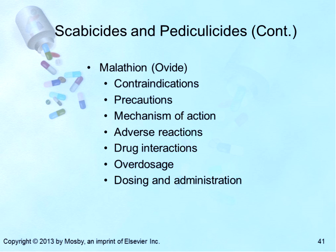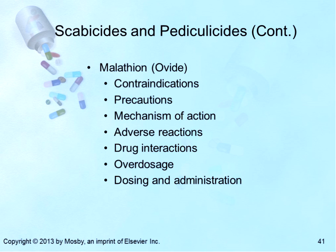Malathion is a weaker cholinesterase inhibitor than other organophosphates, but overdose symptoms are the same. Symptoms of toxicity could be delayed for 12 hours and include abdominal pain, anxiety, unsteadiness, confusion, diarrhea, labored breathing, dizziness, drowsiness, increased sweating, watery eyes, muscle twitching, pinpoint pupils, seizures, and slow heartbeat. For dosage and administration: sprinkle lotion on dry hair and rub gently until the scalp is thoroughly moistened, paying special attention to the back of the head and neck. Allow hair to dry naturally — do not use heat. Leave uncovered and after 8 to 12 hours wash with a non-medicated shampoo; use a fine-tooth comb to remove dead lice and eggs. Repeat with a second application in 7 to 9 days if required. A recent study found that malathion 0.5% in one or two 20-minute applications is 98% effective.